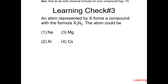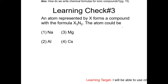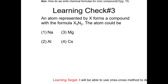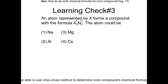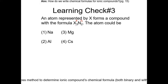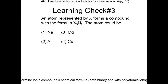Learning trick number 3: an atom represented by X forms a compound with the formula X3N2. The atom could be what? Crisscrossing backwards: 3 will be the charge of nitrogen, and 2 will be the charge of X. N is a non-metal, so it will be a negative 3. Therefore X is a positive 2. Looking at group 2 on the periodic table, it is magnesium. So choice 3.